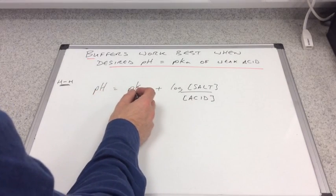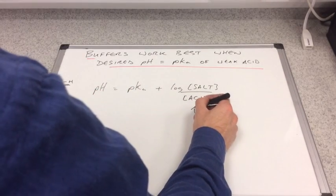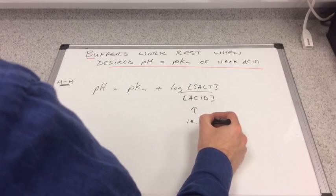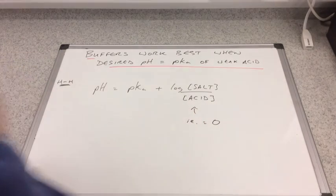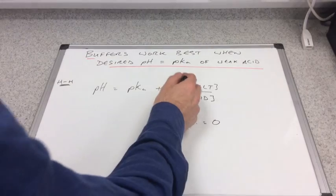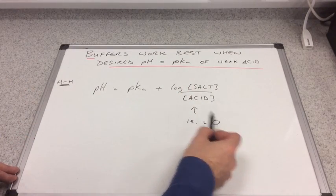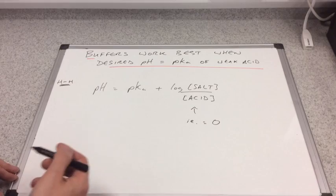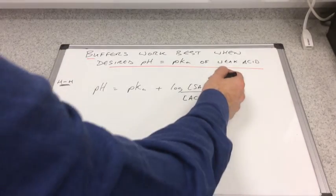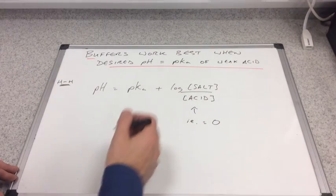We're going to use the Henderson-Hasselbalch equation to explain why that's the case. If we want pH to be equal to pKa, we need this term to be equal to zero. So we want the log of the salt concentration over the acid concentration equal to zero. Now the log of one is zero.